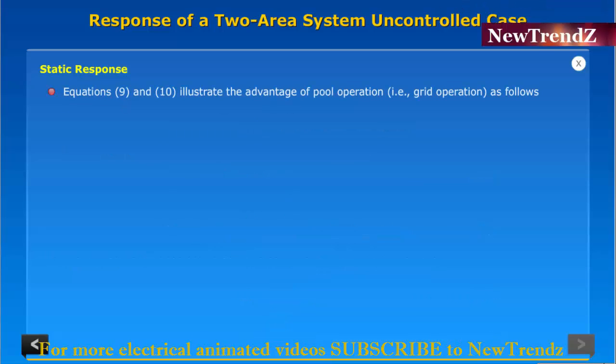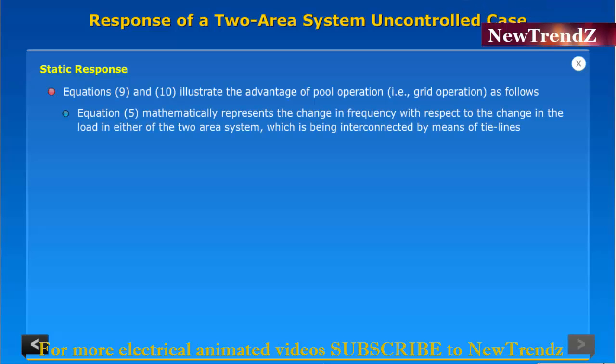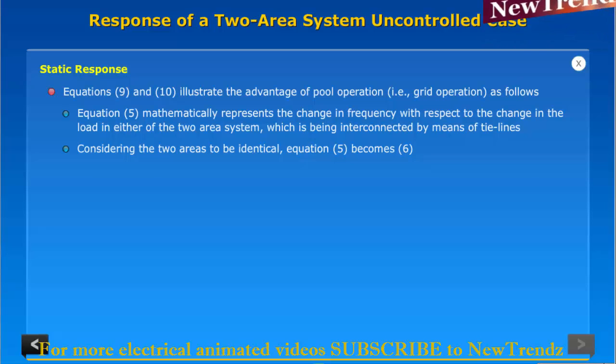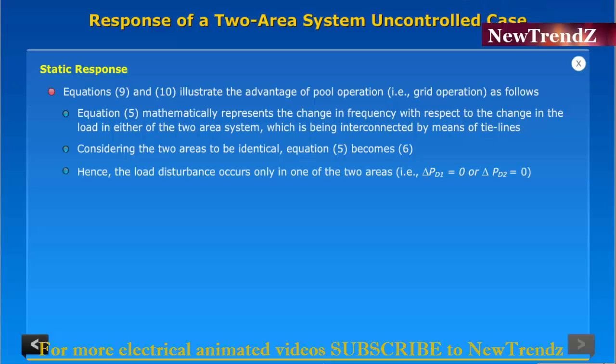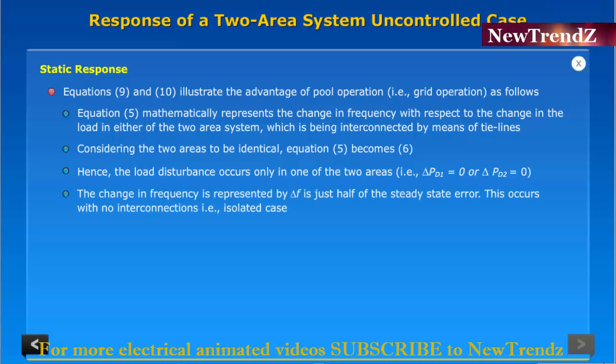Equations 9 and 10 illustrate the advantage of pool operation, that is grid operation, as follows. Equation 5 mathematically represents the change in frequency with respect to the change in the load in either of the two areas system which is being interconnected by means of tie-lines. Considering the two areas to be identical, equation 5 becomes 6. Hence the load disturbance occurs only in one of the two areas, that is ΔPD1 is equal to 0 or ΔPD2 is equal to 0. The change in frequency is represented by ΔF.